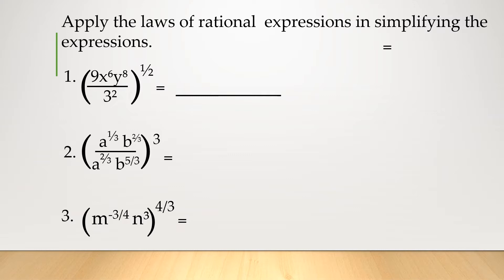So here, example number 1: this is the quantity 9x to the 6th power, y to the 8th power, divided by 3 squared — all of this raised to a power of 1 half, wherein the exponent is a fraction. In doing this, simply distribute the exponent to all of the variables here, or numbers. Same with the denominator. It's just like the power rule for quotient.